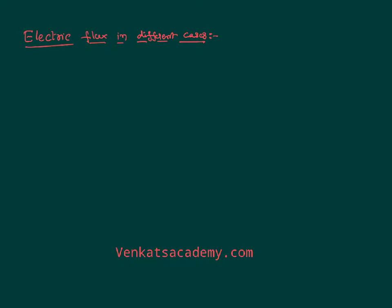Hello everyone, we are talking about electric flux and Gauss's law. We have already explained in the previous video that electric flux — that is the number of lines of force passing through a given area — is also defined as the line integral of E and dS, and can be defined as 1 by epsilon times the total charge existing in a closed surface.